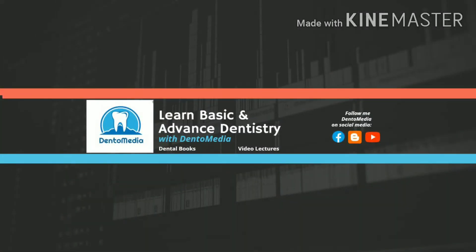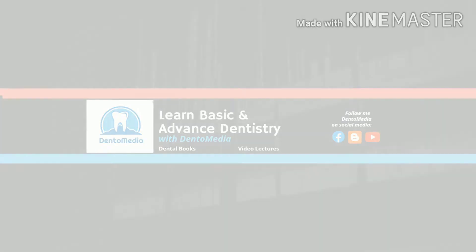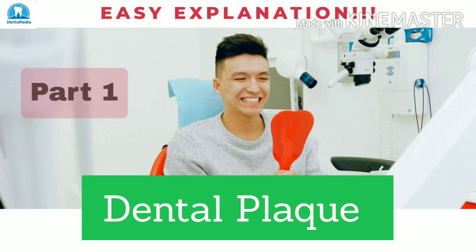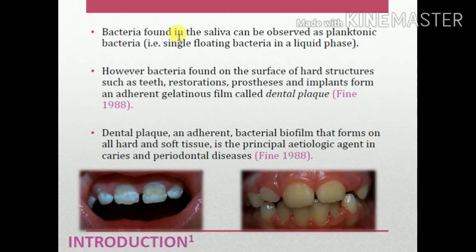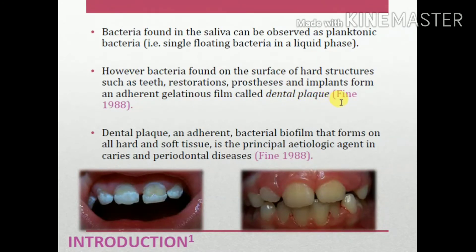Welcome to DentoMedia YouTube channel. This video covers dental plaque — a very important and commonly asked topic. Bacteria found in saliva can be observed as planktonic, meaning floating bacteria in the liquid phase inside the oral cavity. However, bacteria found on surfaces of hard structures such as teeth, restorations, prosthesis, and implants forms an adherent gelatinous film called dental plaque — an adherent bacterial biofilm forming on all hard and soft tissues, and the principal etiologic agent in caries and periodontal diseases.